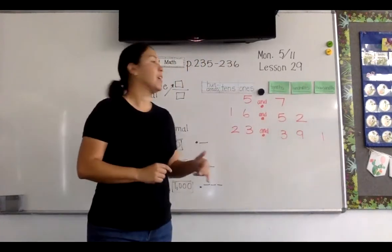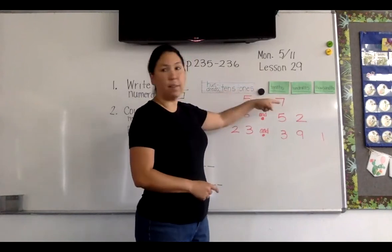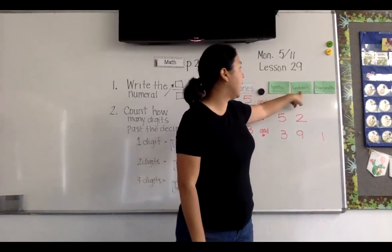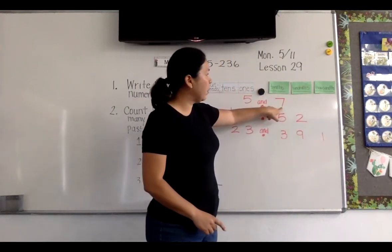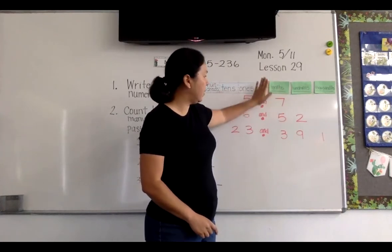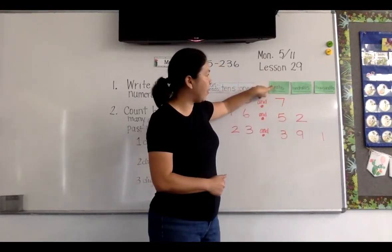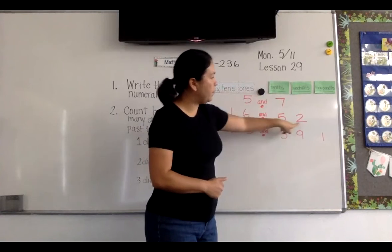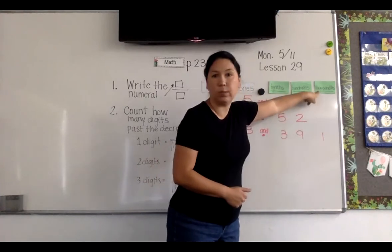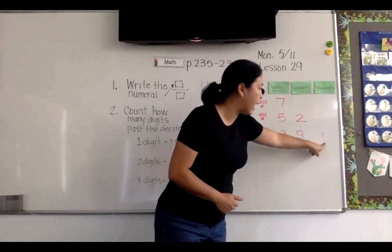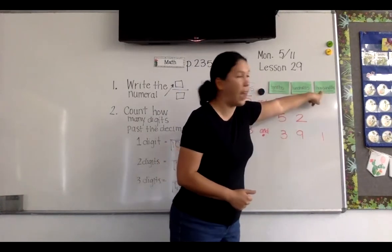Let's look up here. Remember, when we look at the decimal point to the right of the ones place, we have our tenths, hundredths, thousandths. If you're only one number after the decimal, we just say tenths. So pretend there's a line right here: this would be seven tenths, this would be 52 hundredths, this would be 391 thousandths. You always look at where it ends and go up: seven tenths, 52 hundredths, 391 thousandths.